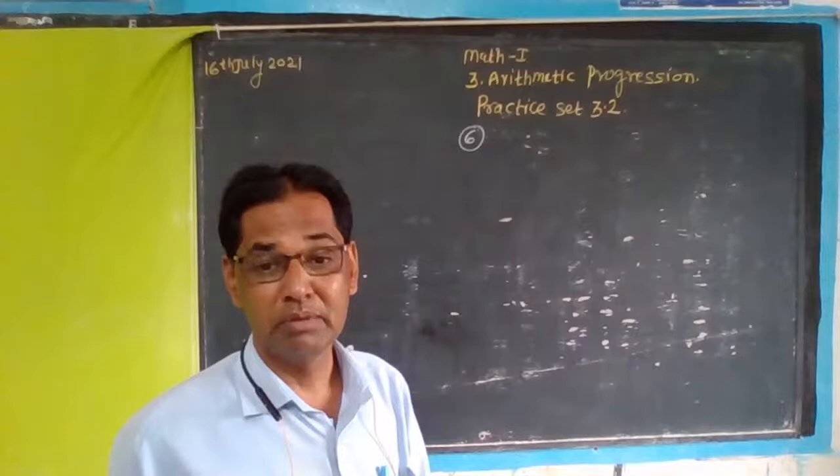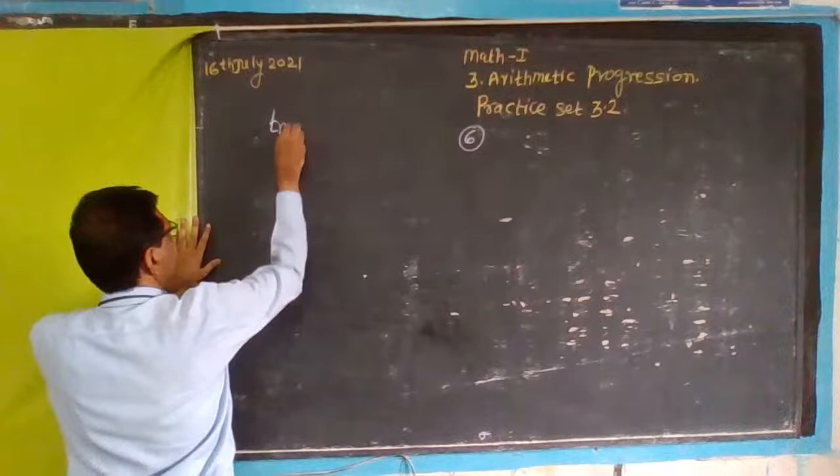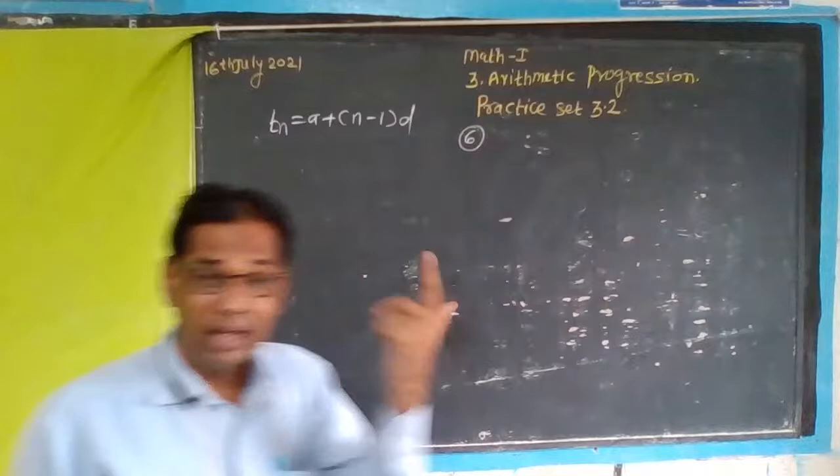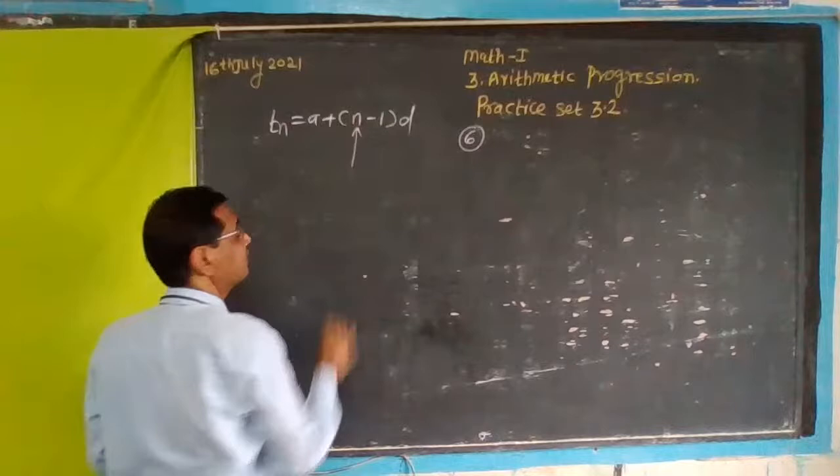The sixth example: find out how many three-digit natural numbers are divisible by 5. Find out how many three-digit numbers which are divisible by 5.